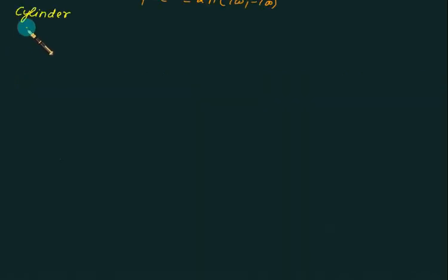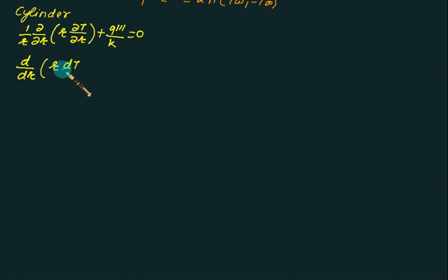Our governing equation becomes 1 by r del del r into bracket r into del t by del r minus q triple dash by k equal to 0. We will first shift q triple dash by k on the right hand side. At the same time we will multiply by r. So we will get del del r of r into dt by dr equal to minus q triple dash into r by k.